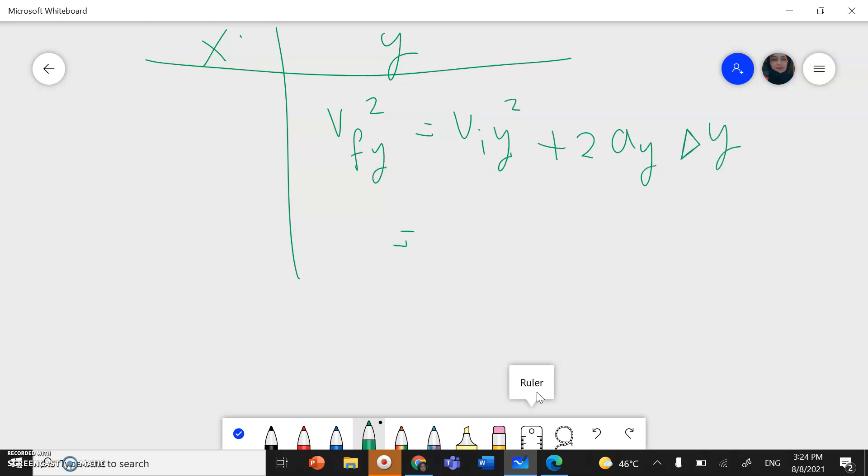The initial y direction was 7.8 and it's negative, squared, plus 2. Acceleration in y direction is negative 10. And the height, the initial height of the ball was negative 2.8.